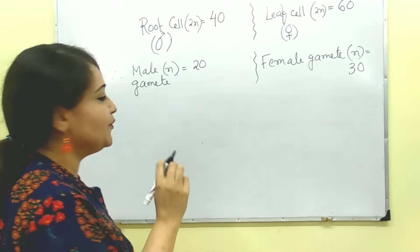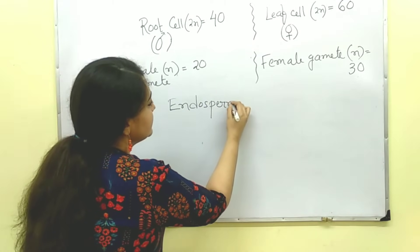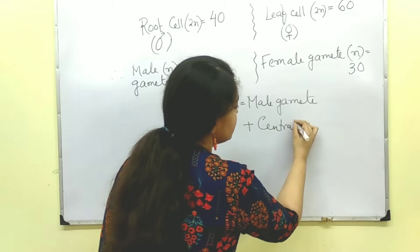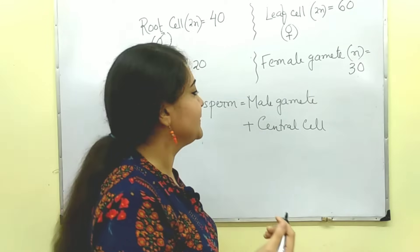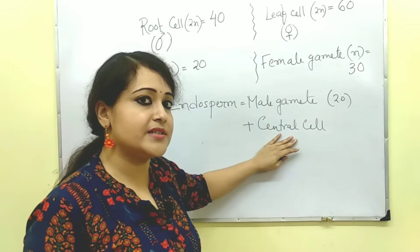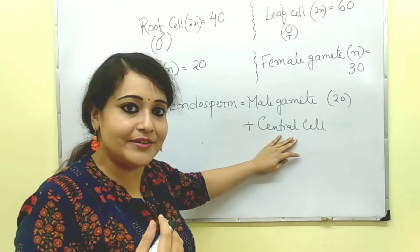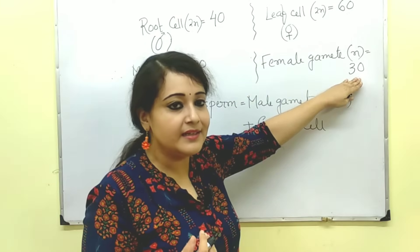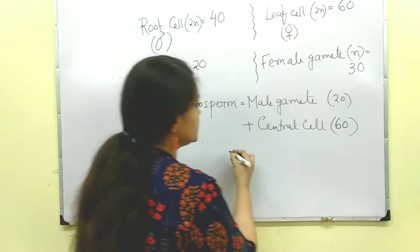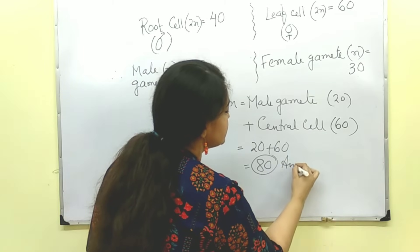Now let us come to the actual question — the number of chromosomes in endosperm. Endosperm is formed by fusion of male gamete along with central cell. Male gamete contains 20 chromosomes. The central cell's chromosome number is double that of the egg cell, which is the female gamete. Female gamete contains 30 chromosomes, so the central cell would contain 60 chromosomes. Therefore the total number of chromosomes present in endosperm would be 20 plus 60, that is 80. This is the answer.